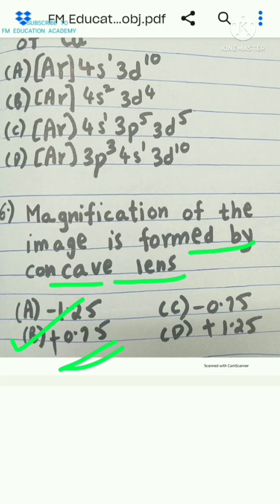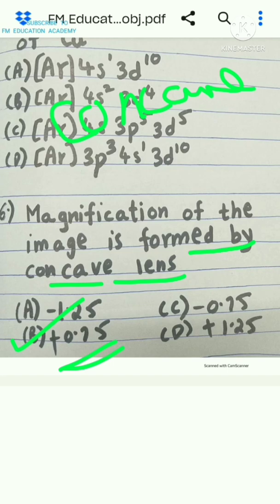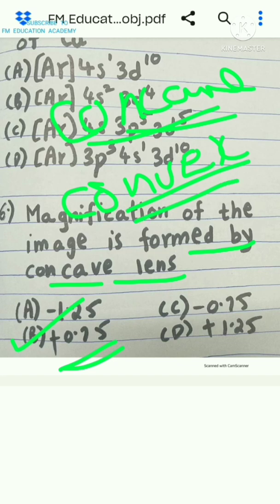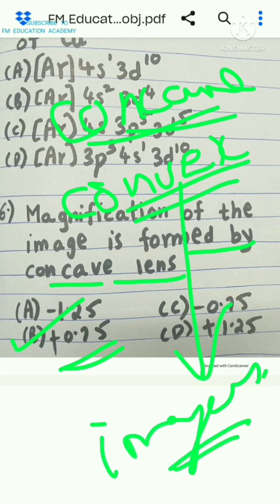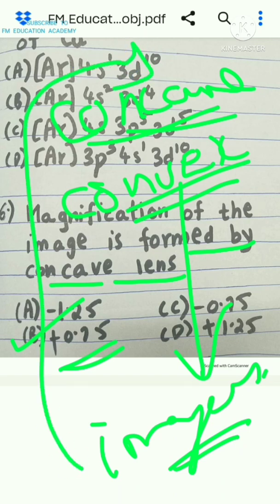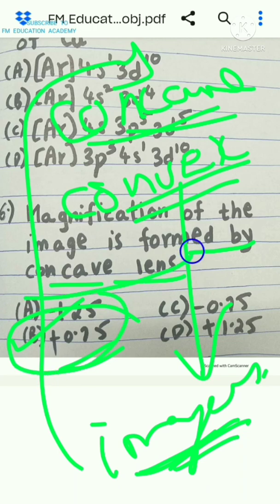Note: if the question had asked about a concave mirror or convex lens, it could produce either real or virtual images, so M could be either minus or plus. But here with a concave lens, M is definitely positive. Sorry for the wrong answer given previously.